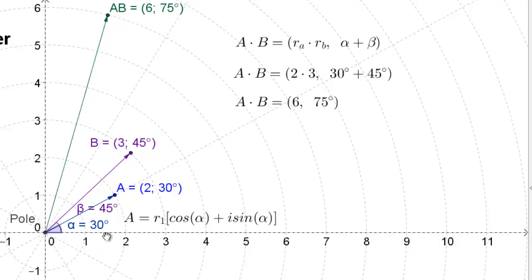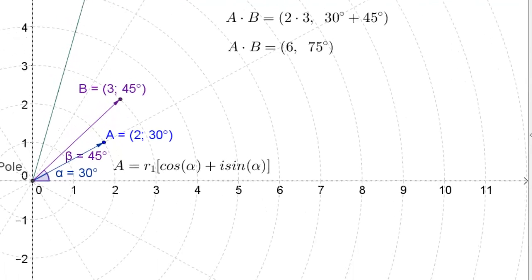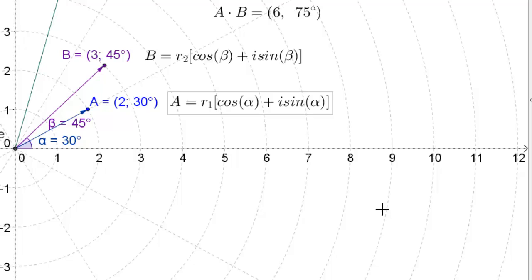Graphically, if we have point A at (2, 30°) and point B at (3, 45°) and we multiply them, we get the product of the two radii, which is 6, placed at an angle of 30 plus 45 degrees, or 75 degrees. That's a pretty bold claim — let's prove it.